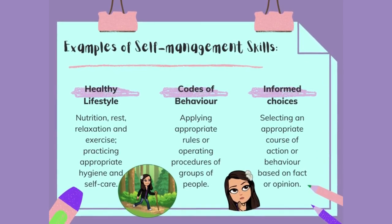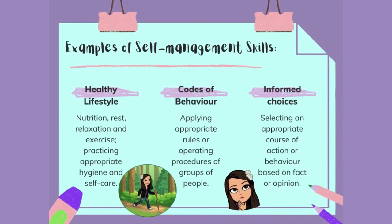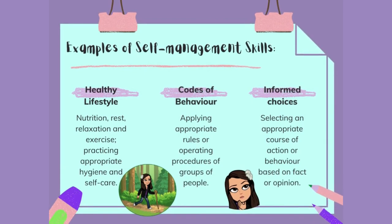Other self-management skills include a healthy lifestyle, in which nutrition, rest, relaxation, and exercise are considered and worked around, as well as practicing appropriate hygiene and healthcare. Codes of behavior, in which students apply appropriate rules or operating procedures of groups of people. And making informed choices by selecting an appropriate course of action or behavior based on fact or opinion.